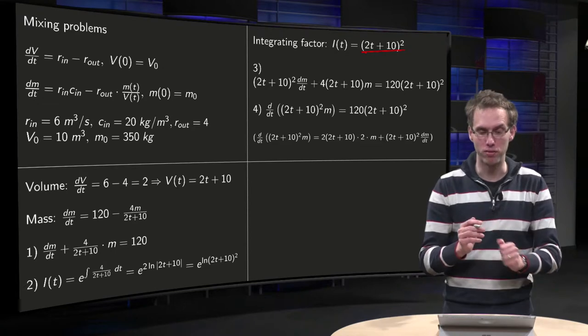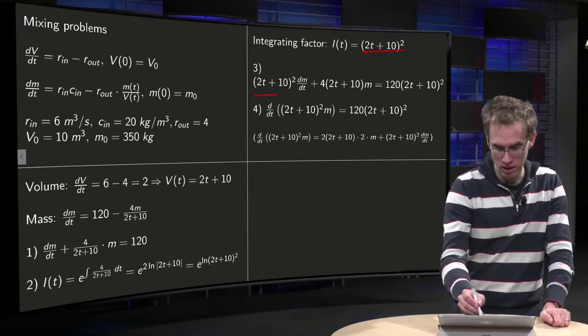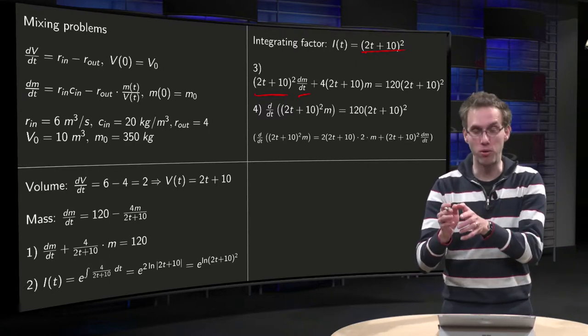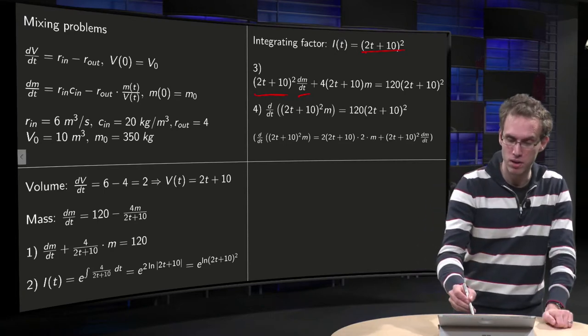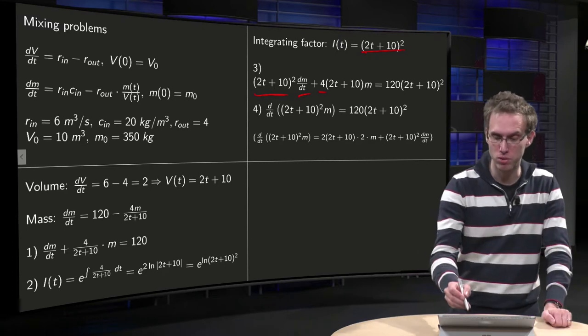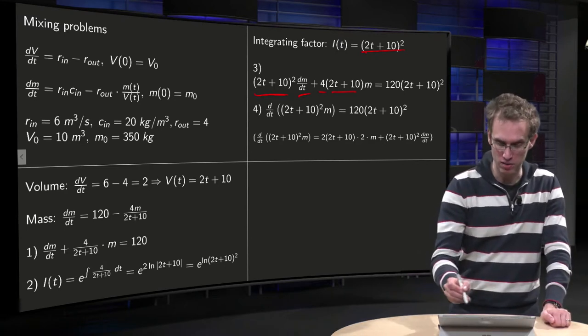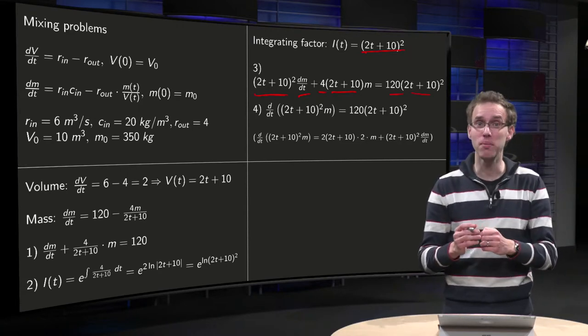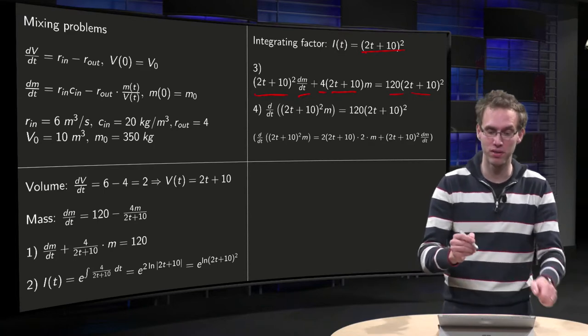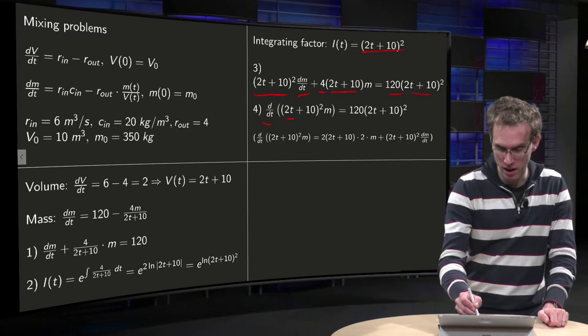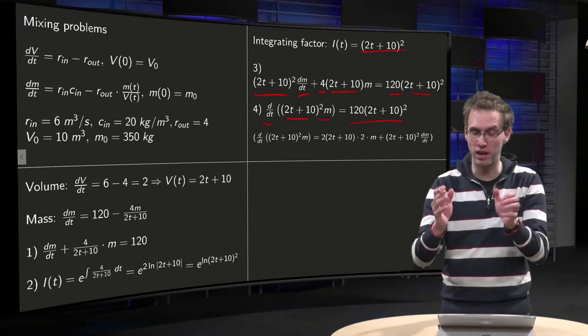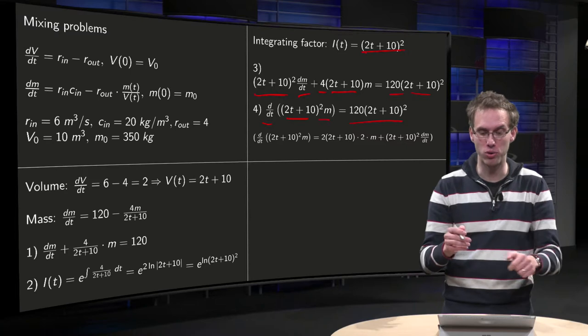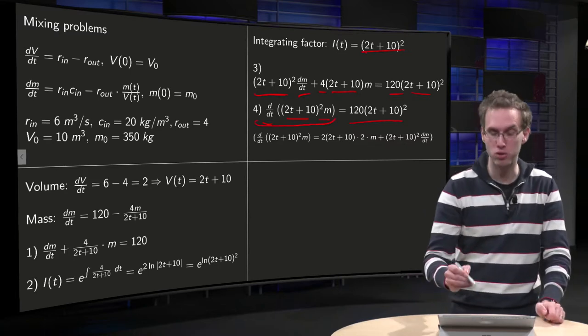Third step. Multiply our full equation by the integrating factor. So I times m prime plus (2t + 10) squared times 4 divided by 2 times (2t + 10). We keep our 4 and one factor of (2t + 10) cancels out. And on the right hand side we just get 120 times our integrating factor. Then the trick step. We can rewrite our left hand side as a single derivative. We get the d/dt of I times m equals right hand side. And check, of course, always check this.